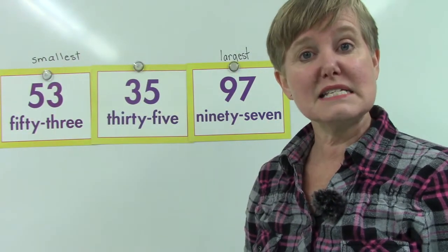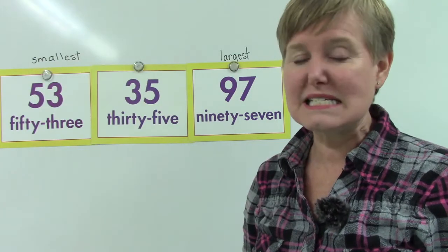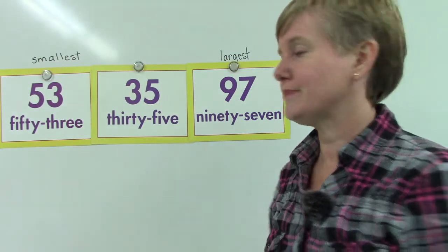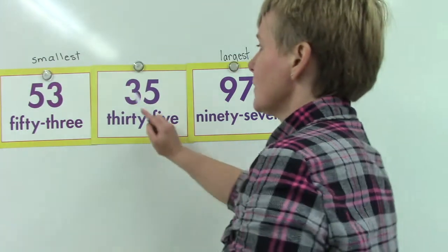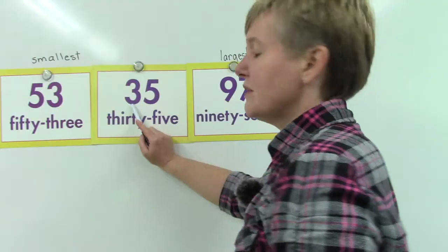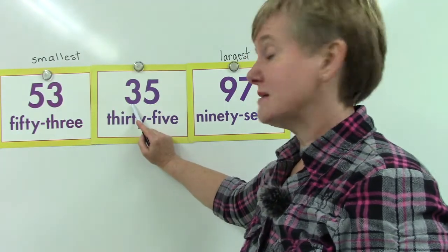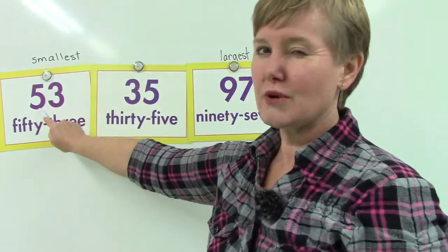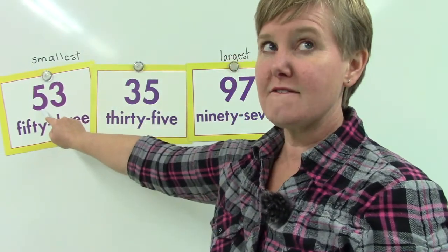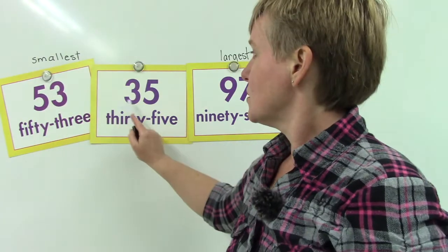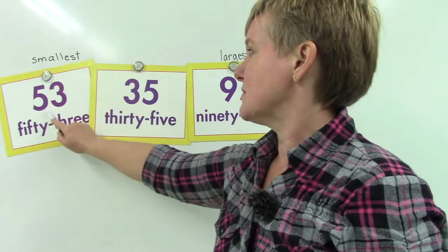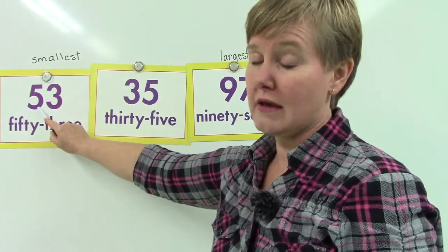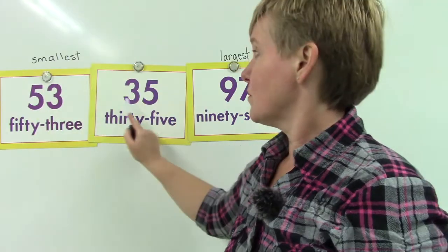Let's take a look at our tens place to see which number is larger. In 35 we have a 3 in the tens place, and in 53 we have a 5 in the tens place. Which one of these would be smaller — the 5 or the 3?